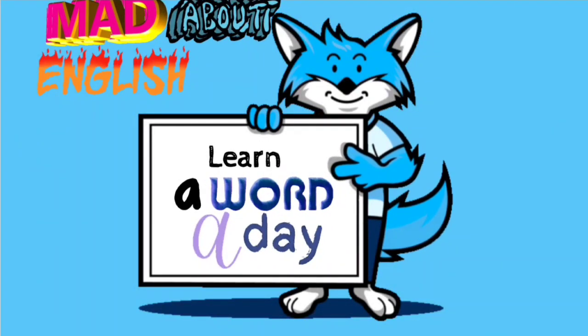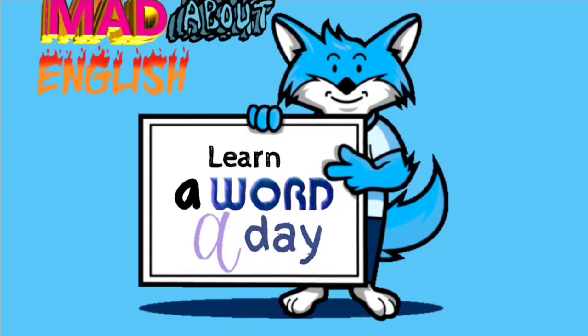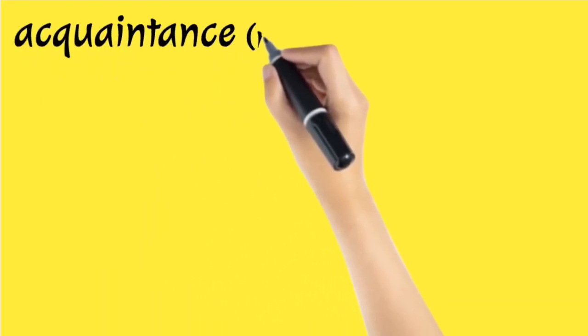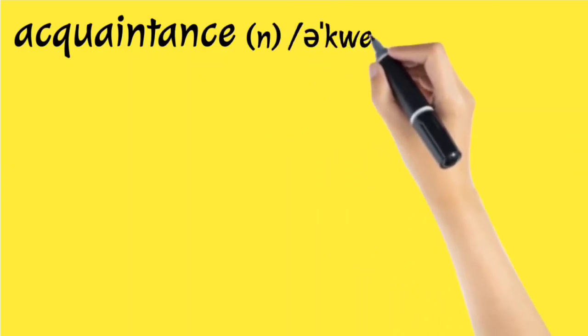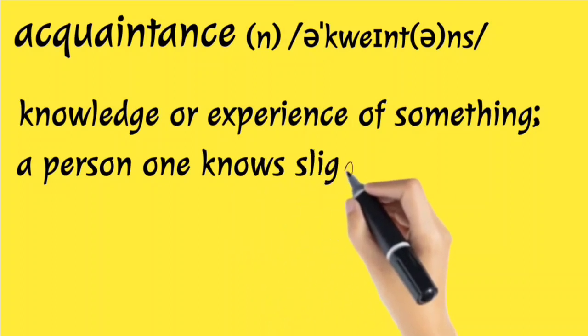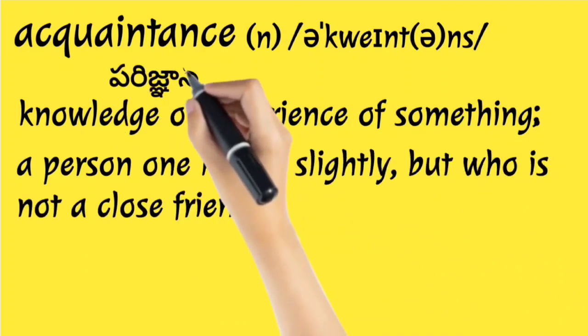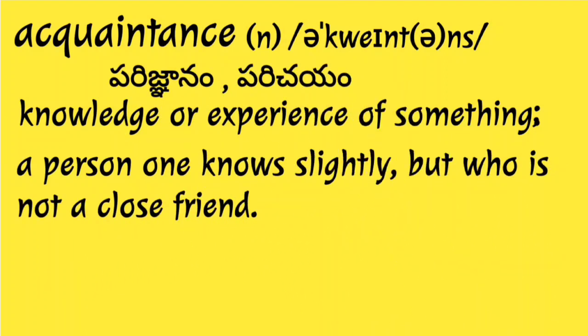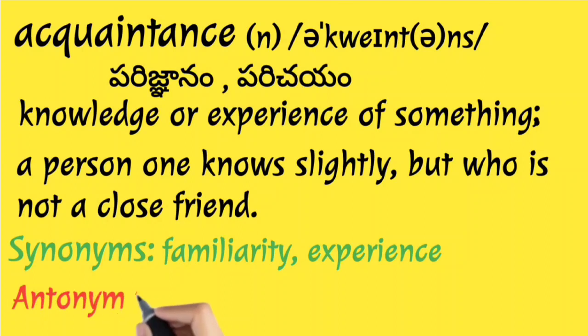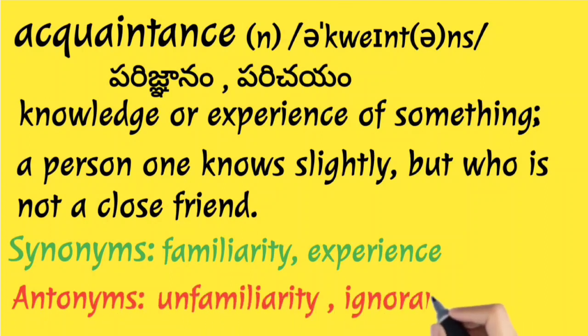Hi dear ones, welcome back to Mad About English. Today's word is acquaintance. It's a noun: knowledge or experience of something; a person one knows slightly but who is not a close friend. Parignanam, parcheam. Synonyms: familiarity, experience. Antonyms: unfamiliarity, ignorance.